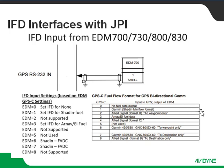Over here on the right-hand side, this column is the GPS-C settings from the EDM side of things. You'll notice the first one is a zero — that's if you're not using GPS to track any of this stuff, you're not spitting any of this data out. The next one is a GPS-C setting of one, which is the Shaden MiniFlow format. The IFD equivalent for that is going to be Shaden Fuel. GPS-C setting number two is an Allied Signal format — this one's format B — and if we go over here to the IFD side you'll see that that's not supported.